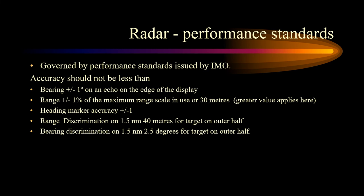The bearing discrimination on a 1 and 1.5 nautical mile range scale should be about 2.5 degrees for targets on the outer half of the display. The range discrimination on the 1.5 nautical mile range scale should be about 40 meters for targets on the outer half of the display.